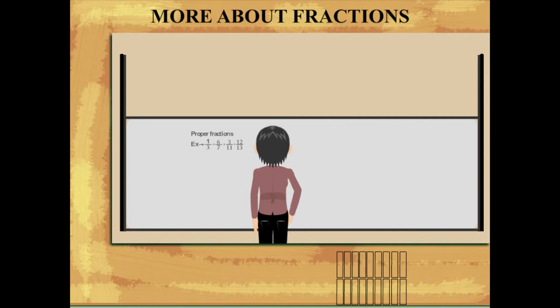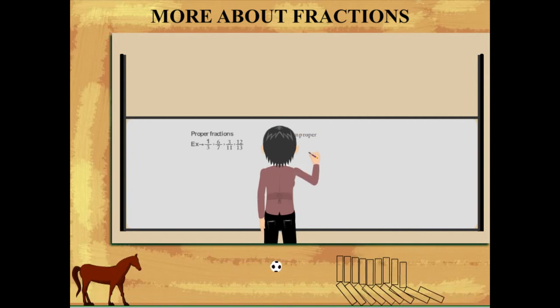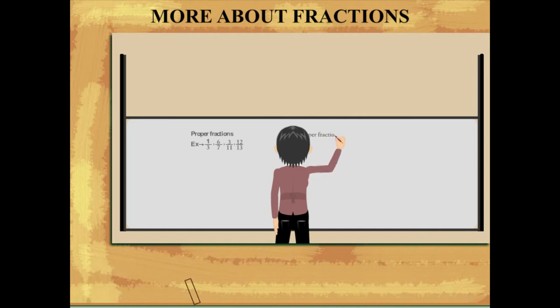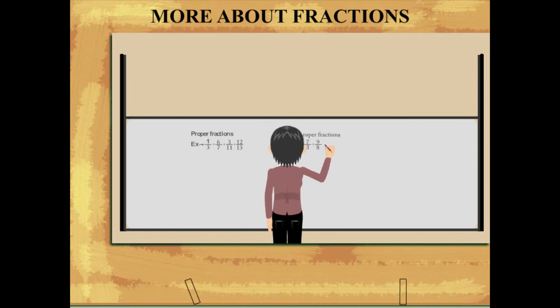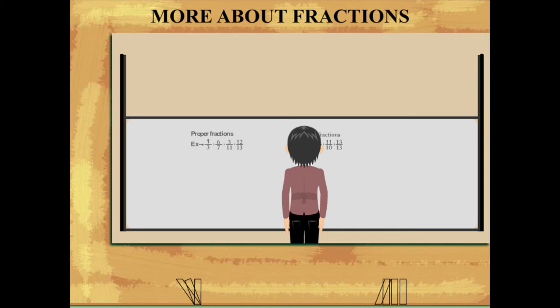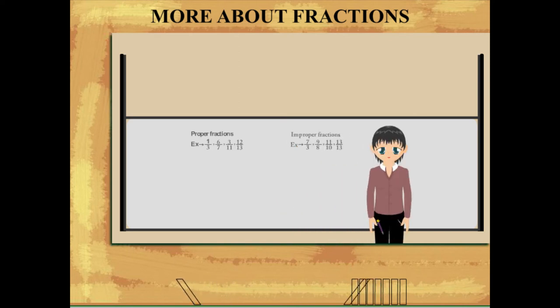Nancy ma'am moves on to describe improper fractions. She writes the example 7 by 3, 9 by 8, 11 by 10, 13 by 13. These are called improper because the numerator is larger than the denominator.